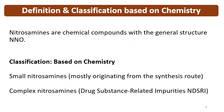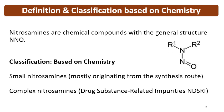Nitrosamines are chemical compounds with the general structure of N and O. The Nitroso group is attached to the Amine group. This is the generalized structure: N with a double bond to O — so the N=O group is the Nitroso group.